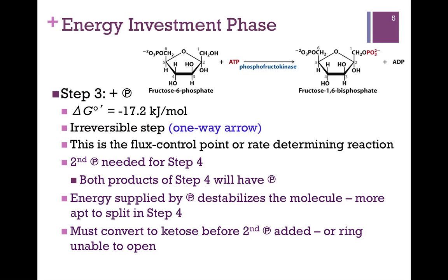In Step 3, we add our second phosphoryl group, again from ATP, converting fructose-6-phosphate to fructose-1,6-bisphosphate. That is catalyzed by the enzyme phosphofructokinase. We looked at this enzyme in an earlier chapter as an example of allosteric regulation, and we'll look at its regulation more particularly in a later video. Note that Steps 1 and 3 each cost us a molecule of ATP — that's the energy investment portion of this phase. This large favorable change in delta G makes it an irreversible step, indicated by the one-way arrow, and this is the actual flux control point, or rate-determining reaction, in the pathway.